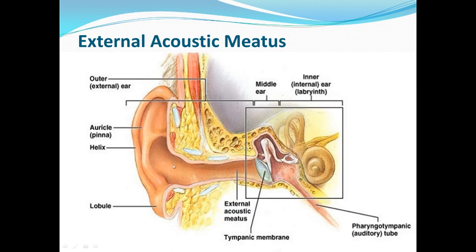Talking about the cartilaginous part: this cartilaginous part is also C-shaped in cross-section and the lining of the skin here is adhered to the perichondrium — the outer covering of the cartilage. This outer part also contains hairs, sebaceous glands, as well as ceruminous glands or wax glands, which produce wax. The ceruminous gland is nothing but modified sweat glands present in the cartilaginous outer one-third of the external acoustic meatus.